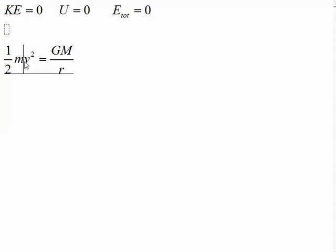So the object doing the escaping, we don't need to know its mass. We can take this one-half and cross-multiply it to the other side, but it would be more convenient to add it upstairs as a 2.